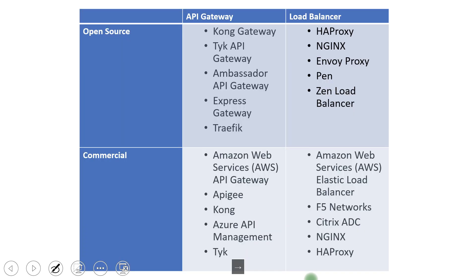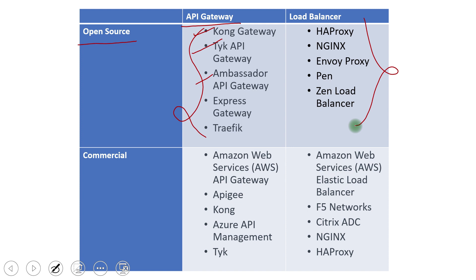There is a table listing the top API gateway and load balancer providers. For API gateways, open-source providers include Kong, among others. For load balancers, commercial providers include AWS, Apache, Kong, and Azure. Every cloud provider offers a commercial offering around both of these — so that is the load balancer and API gateway provider landscape.